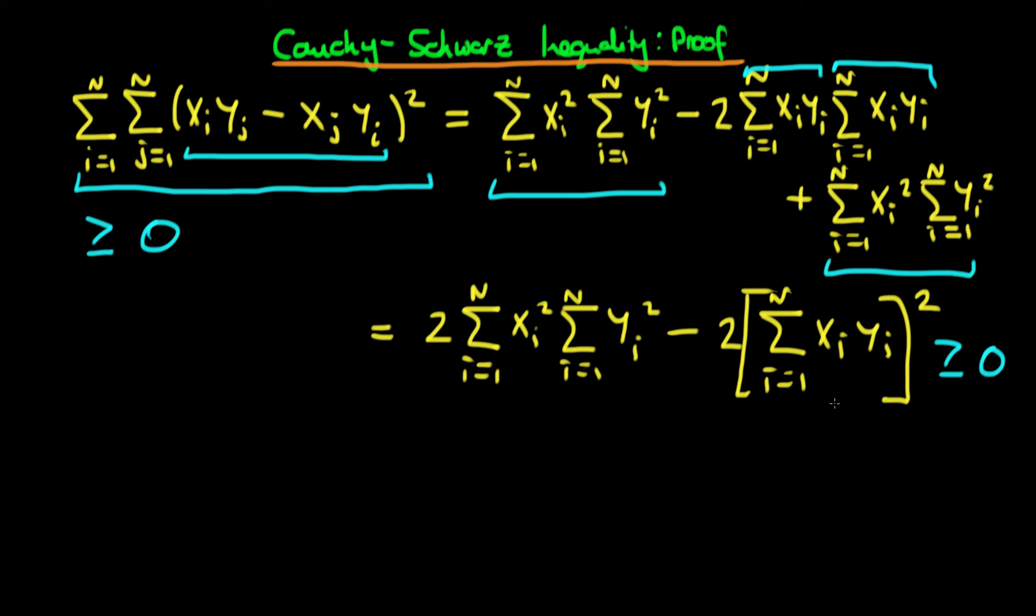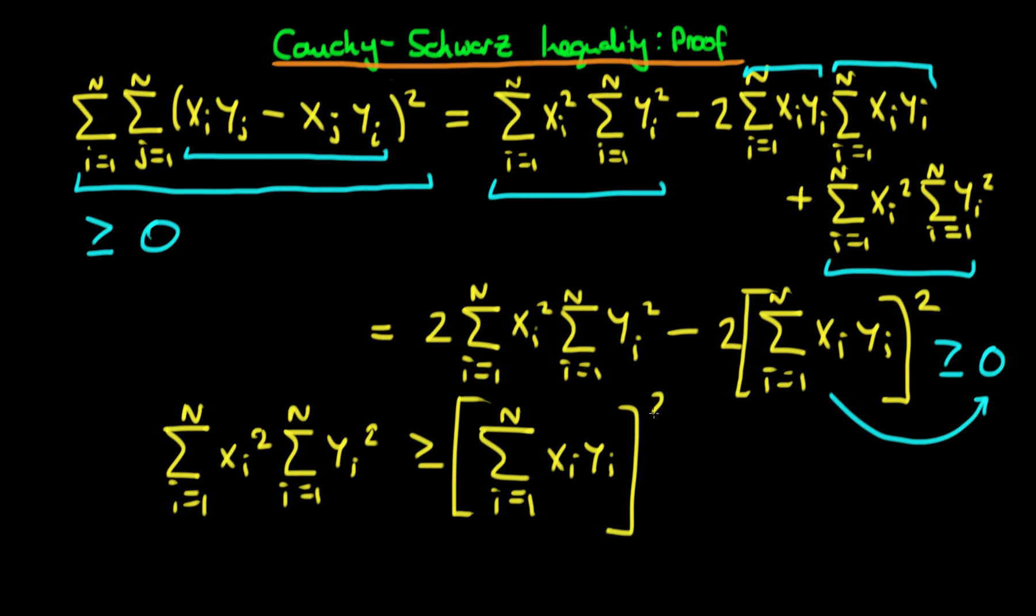Then what we do is we take this term over to the right hand side and then we just get left with, if we cancel the twos, we get the sum from i equals 1 to n of xi squared times the sum from i equals 1 to n of yi squared must be greater than or equal to the sum of i equals 1 to n of xi times yi, and then we need to square this entire right hand side. So in doing so we have proved the Cauchy-Schwarz inequality.